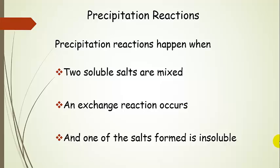Now that we know how to predict whether something is soluble or not, we're going to apply it in precipitation reactions. These reactions happen when you take two solutions of soluble salts and mix them together. An exchange reaction happens, and after that exchange reaction occurs, one of the salts formed is insoluble — and if that happens, you get a precipitation, which is a solid that forms and then settles to the bottom of the container.